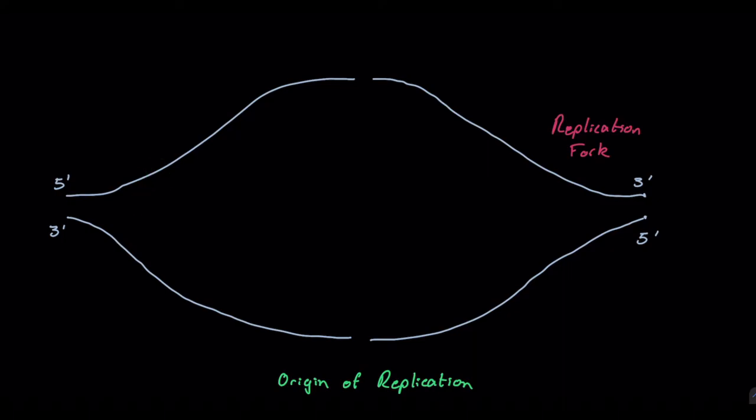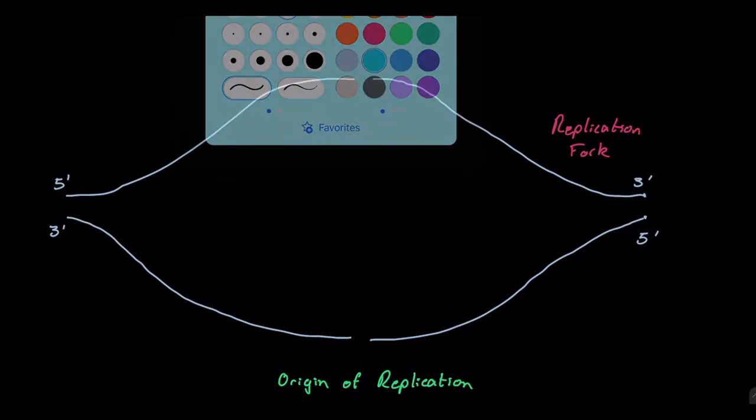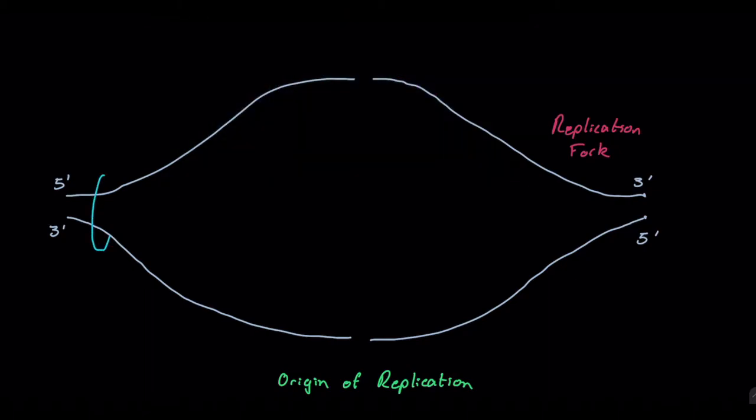And how we actually get this started is with an enzyme that will unwind the DNA called helicase. So the helicase is unwinding the DNA in these directions, going left and right there. Helicase. Knowing the name of that will definitely be important. So helicase is what is actually separating those there.